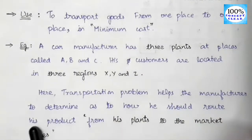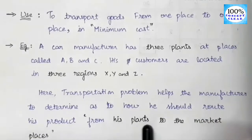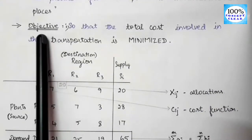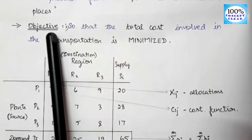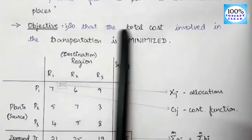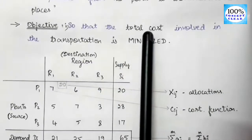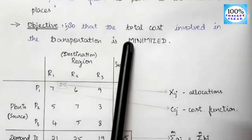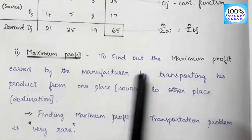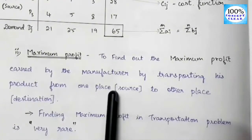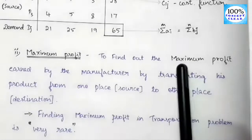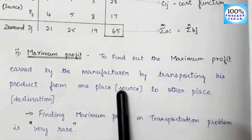The routing goes from the manufacturing area to the customers' place. Every company has two main objectives: first, to minimize the total cost involved in transportation, and second, to maximize the profit earned by the manufacturer by transporting his product from the source — the manufacturing area — to the destination, which is the customers' area.